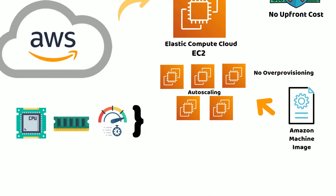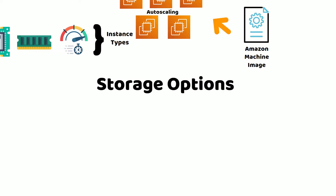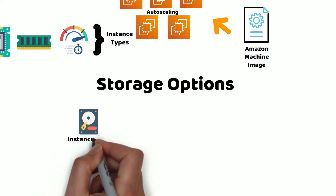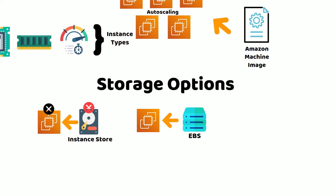To provide maximum flexibility, EC2 allows various types of storage options depending on the use case. Instance store volumes are attached to the physical servers on which the instance runs; therefore, data on these volumes will not survive when the instance is stopped or terminated. EBS volumes are block storage volumes and can be attached to only one EC2 instance. Data on EBS volumes persists even when the instance stops or terminates.